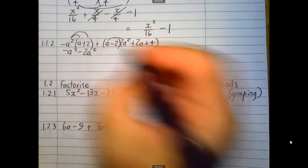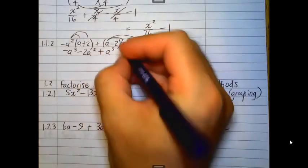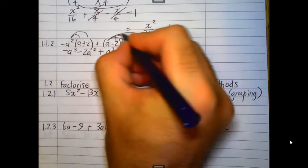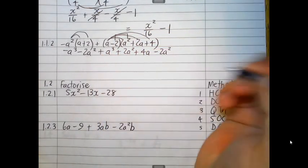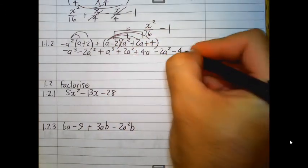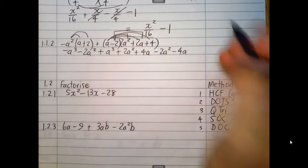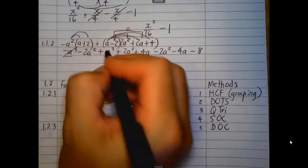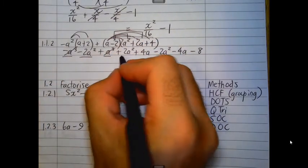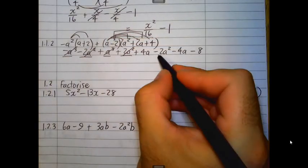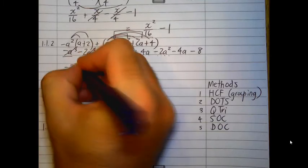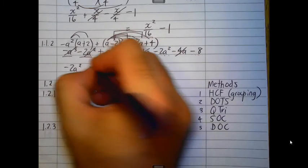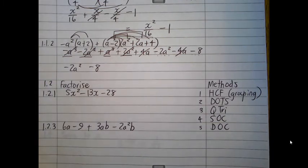Focusing on this bracket, A times A squared is A cubed. A times 2A is 2A squared. And A times 4 is 4A. The negative 2 must be multiplied in. Negative 2 times A squared is negative 2A squared. Negative 2 times 2A is negative 4A. And the last one, negative 2 times 4 is negative 8. Let's look for like terms. Negative A cubed and positive A cubed are going to cancel each other out. Negative 2A squared and 2A squared are going to cancel each other out. And we've got this here, a negative 2A squared left.